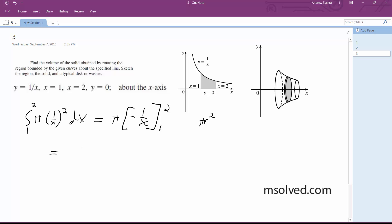So we end up with, finally, pi times negative 1 half plus 1, which equals pi over 2. That's 1 half times pi. So that's our volume, that's it.